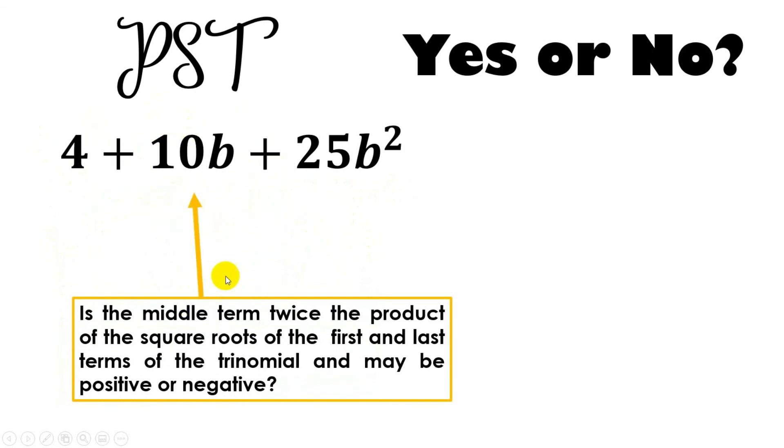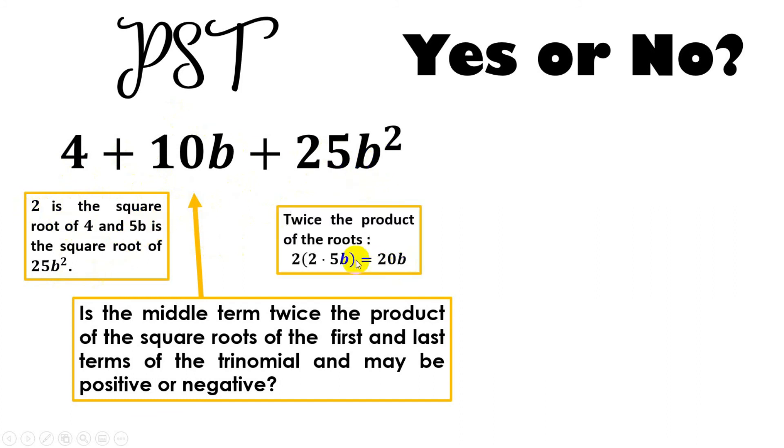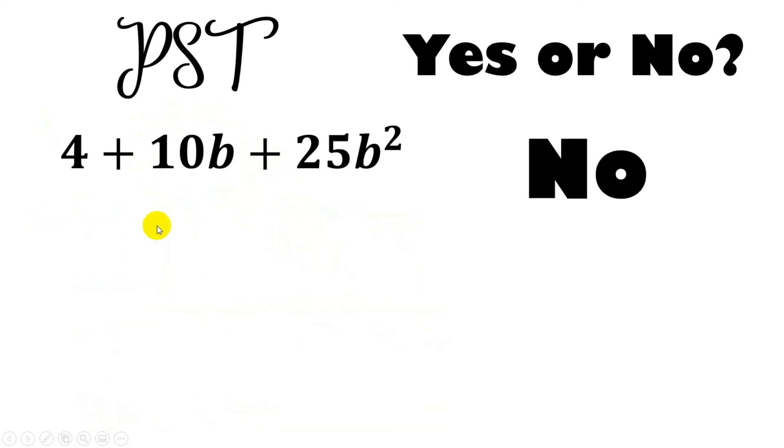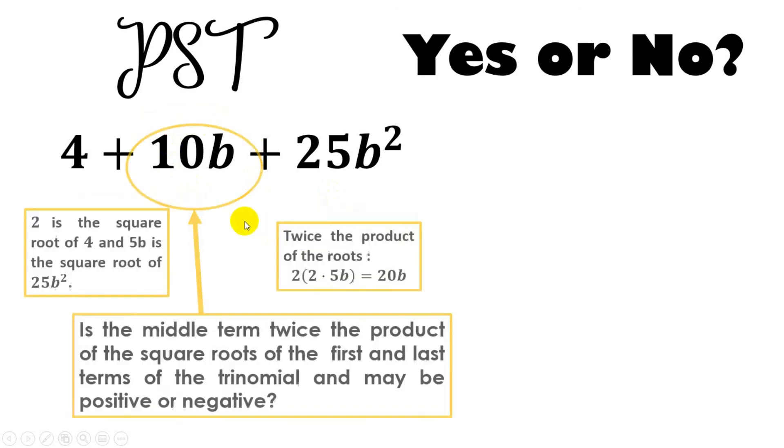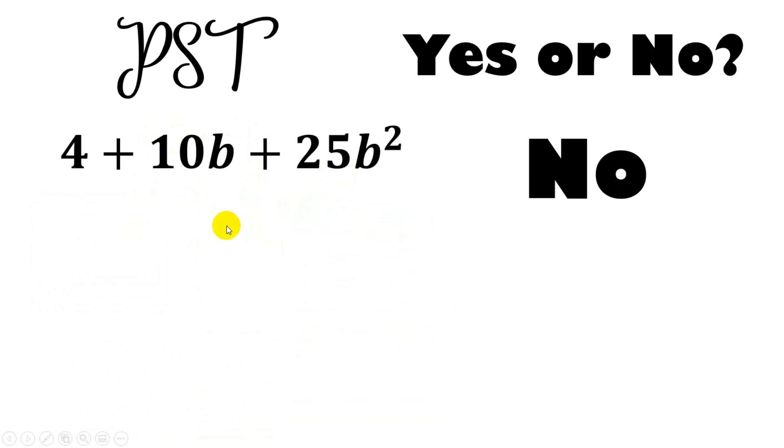It should be twice the product of the square roots equal to this. What is the square root of 4? That is 2. What is the square root of 25? That is 5. And square root of b squared is b. 2 times 5b is 10b. But, again, we have the word twice, so we multiply it by 2. 10b times 2 is 20b. Is 20b our middle term? The answer is no. That is why this trinomial is not a PST. Again, if our middle term is not twice the product of the roots, automatically, it is not considered as PST. Is that clear?